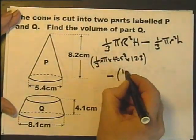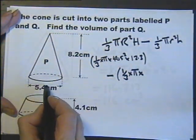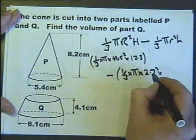minus a third, multiplied by pi, multiplied by the radius of this squared, which is half of that, multiplied by the height of that.